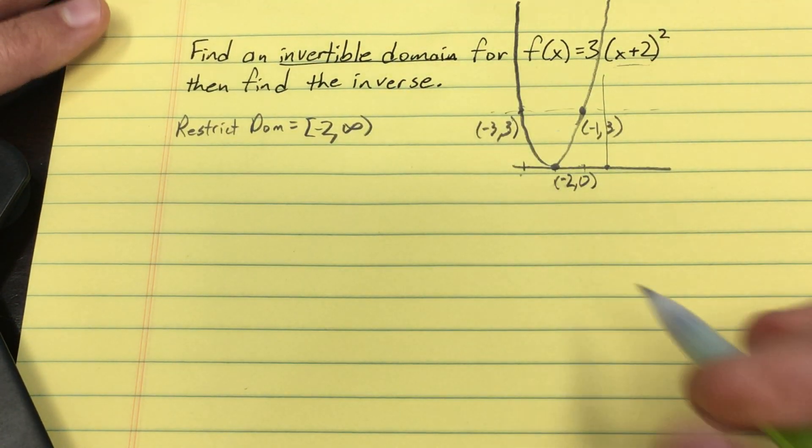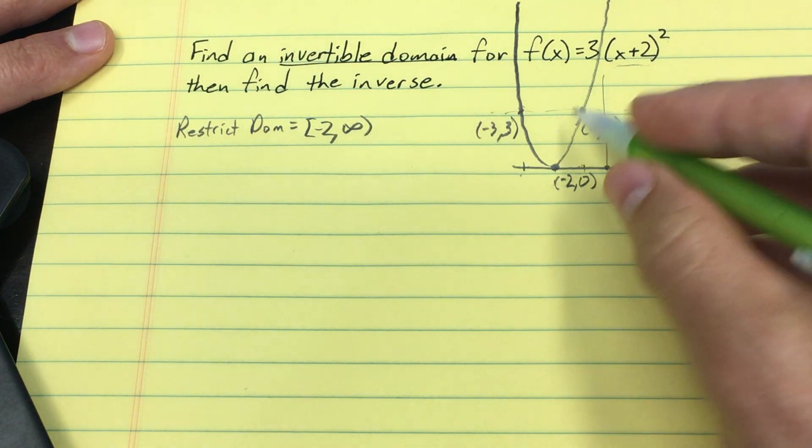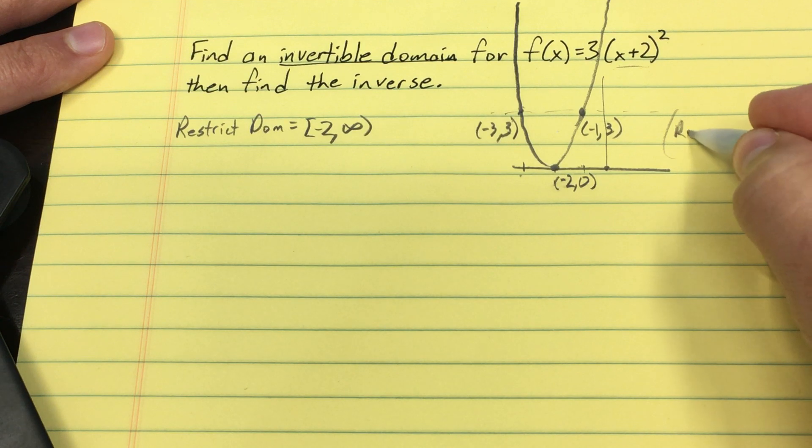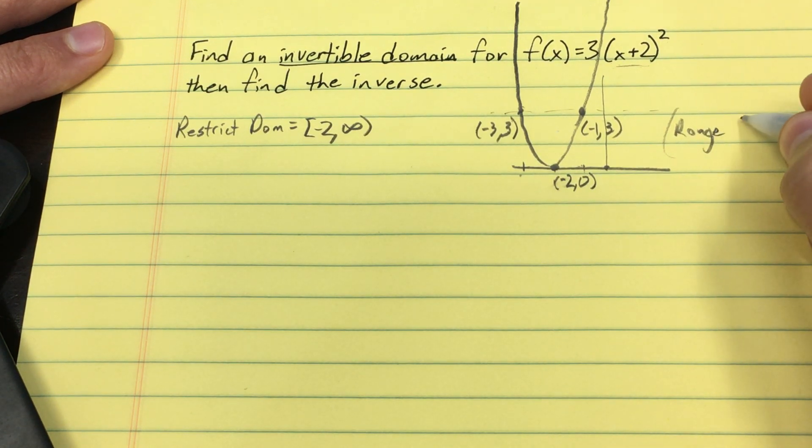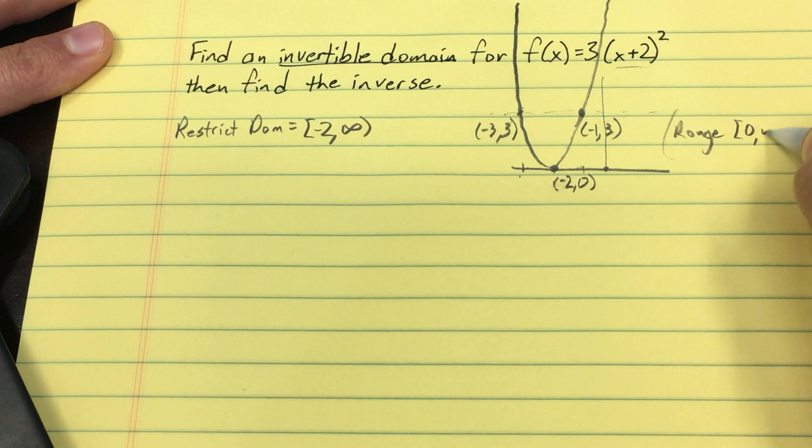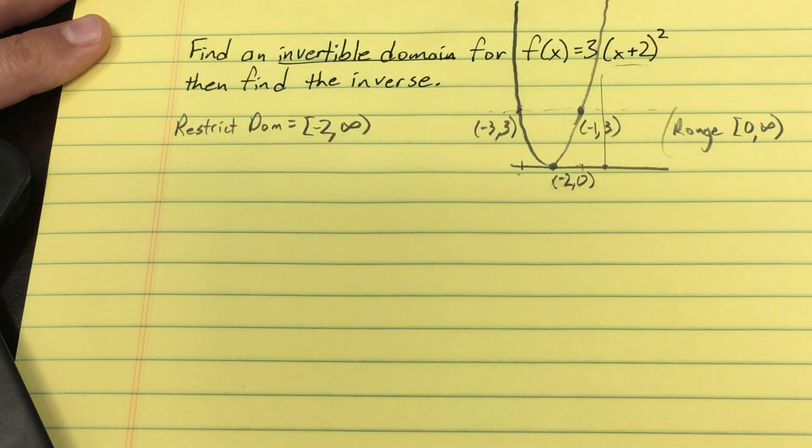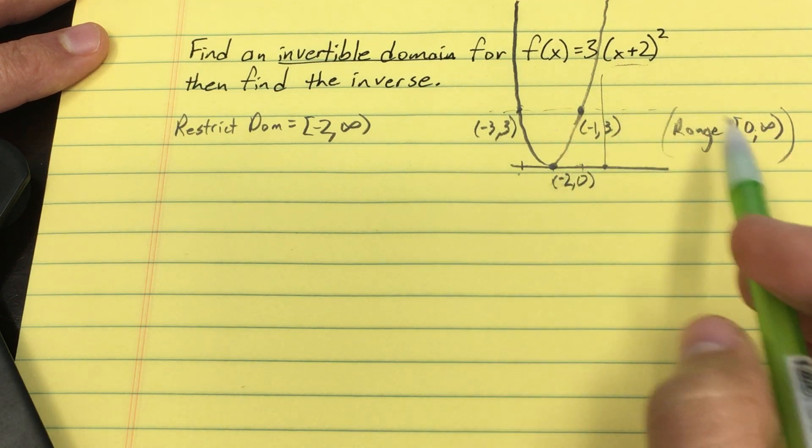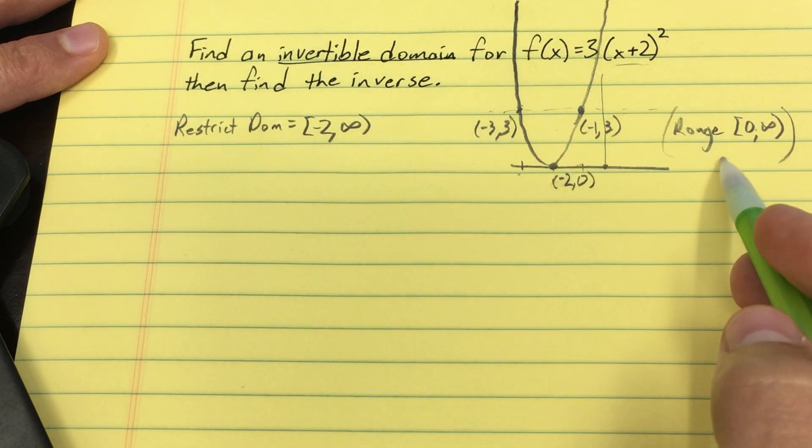Now, as an aside, what does that do to the range? Well, the range is going to be 0 to infinity, right? When I get an inverse function, it's going to swap the range and the domain, right? So this is the range.